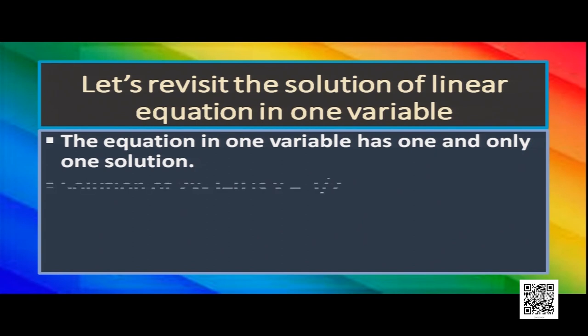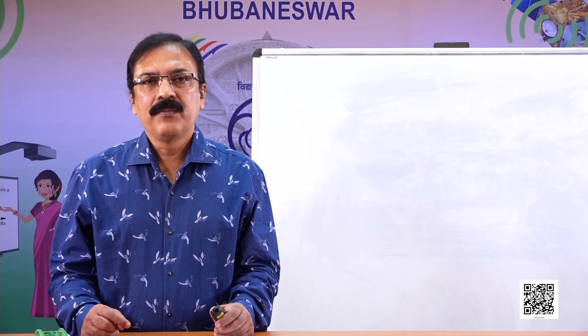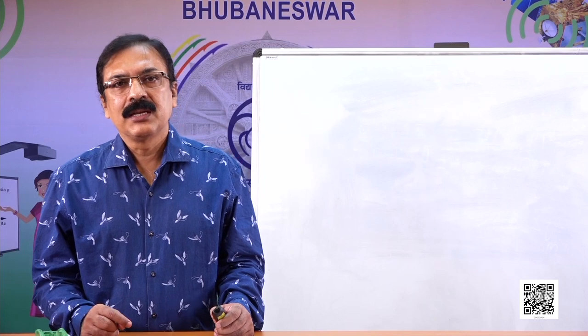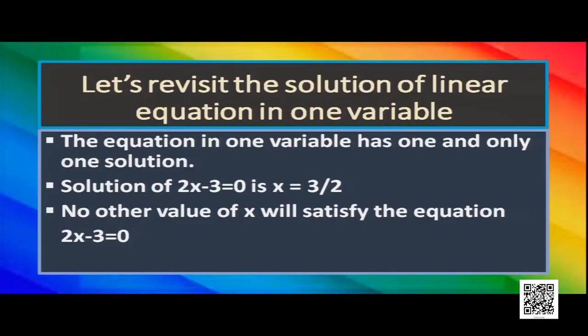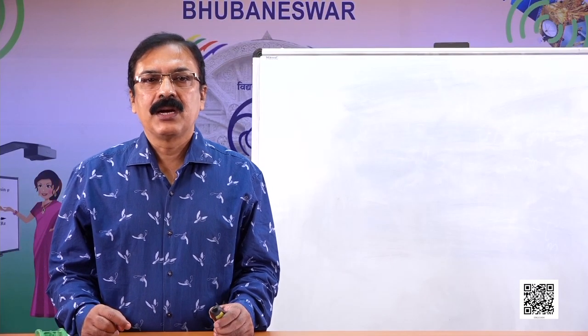We can see from this example: 2x minus 3 is equal to 0. Here, the solution is x equals 3 by 2. That means if we put the value of x as 3 by 2, then the result will be 0. Can we get any other value of x for which 2x minus 3 will be 0? If we try, we will see that no other value of x satisfies the equation. So in this case, the solution is said to be unique.